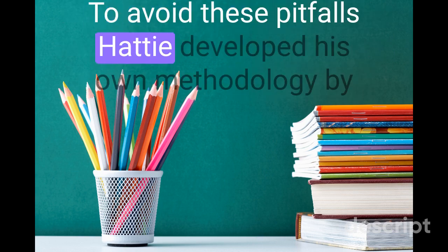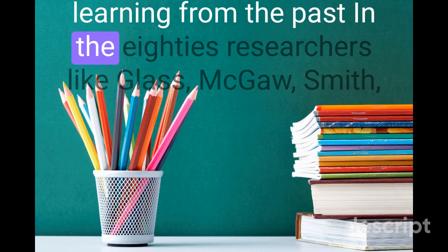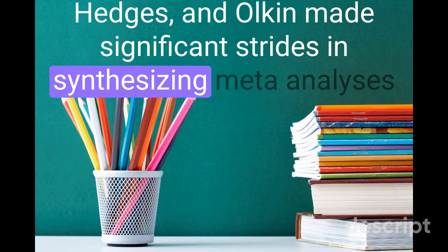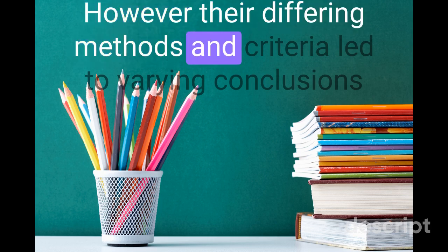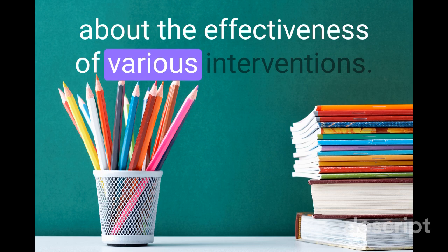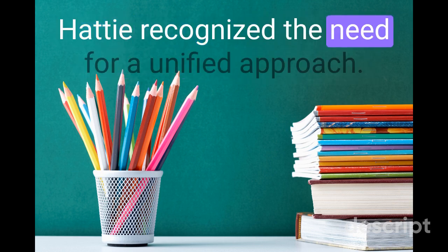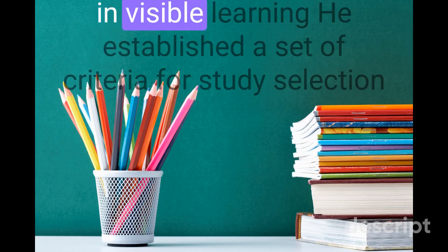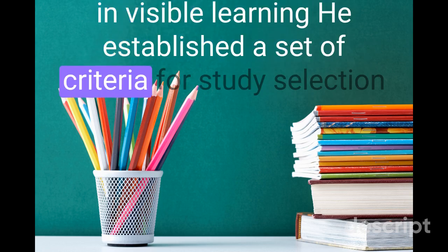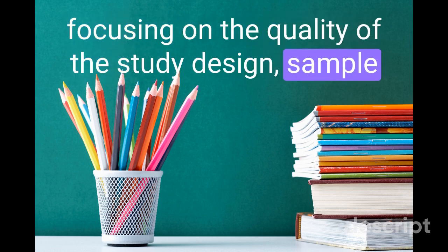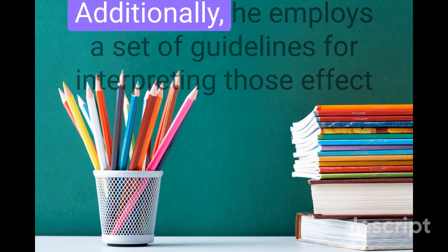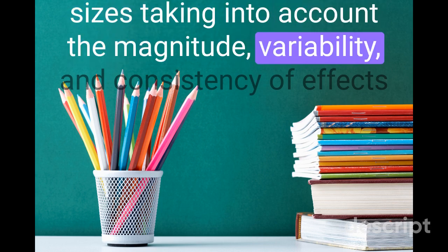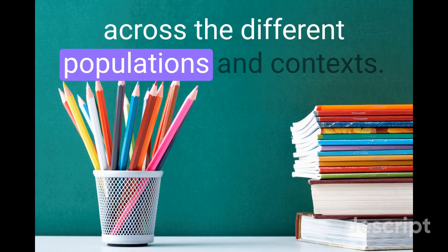To avoid these pitfalls, Hattie developed his own methodology by learning from the past. In the 80s, researchers like Glass, McGaw, Smith, Hedges, and Olkin made significant strides in synthesizing meta-analyses. However, their differing methods and criteria led to varying conclusions about the effectiveness of various interventions. Hattie recognized the need for a unified approach. He established a set of criteria for study selection, focusing on the quality of the study design, sample size, and relevance to the research question. Additionally, he employs guidelines for interpreting effect sizes, taking into account the magnitude, variability, and consistency of effects across different populations and contexts.